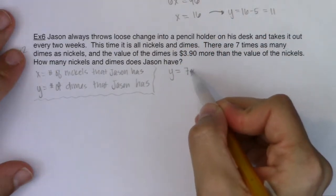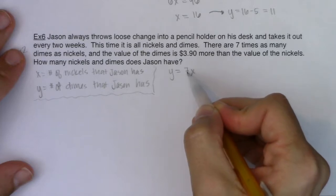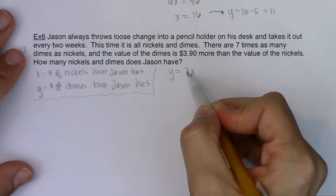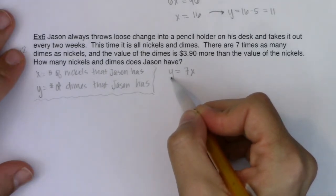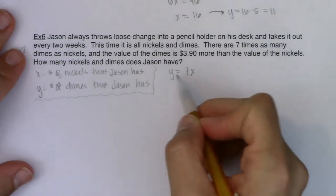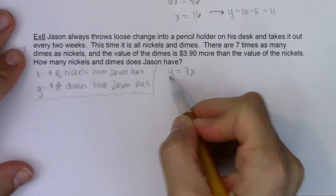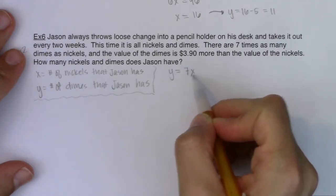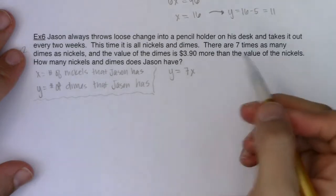Because for however many dimes Jason has, if you multiply that by seven, that's the number of nickels that he has. So there are seven times as many dimes as nickels. If he's got like five nickels, then he's got way more dimes. He's got 35 dimes. And that makes sense, right?